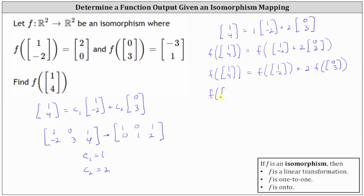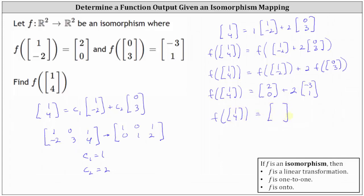Performing substitution, we have F of the vector (1, 4) equals F of (1, -2), which is the vector (2, 0), plus 2 times F of (0, 3), which is the vector (-3, 1). Simplifying: the first component is 2 plus 2 times -3, that's 2 plus -6 or -4. The second component is 0 plus 2 times 1, or 2. Therefore, F of the vector (1, 4) equals the vector (-4, 2). I hope you found this helpful.